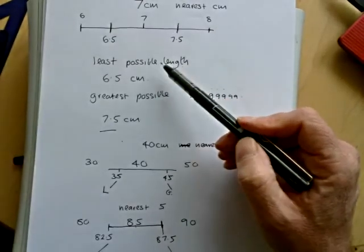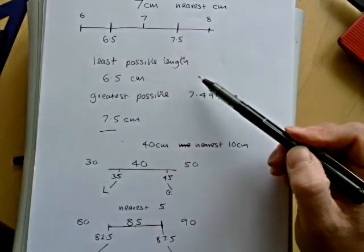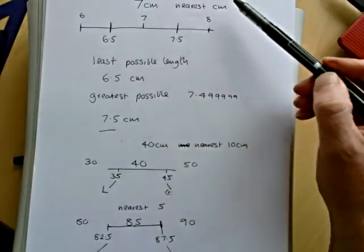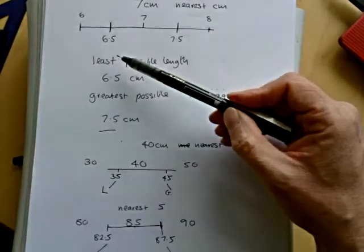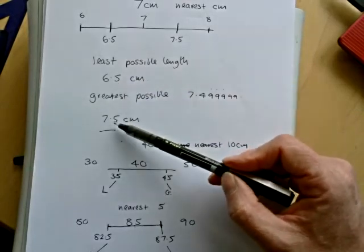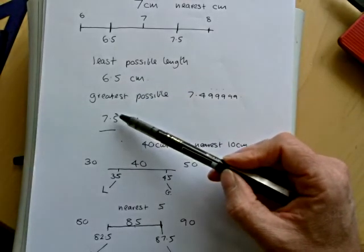This though, this one here, is the most common one that comes up in exams. So 7 centimeters to the nearest centimeter, the lowest it could be is 6.5, the lowest it could be is 7.5.